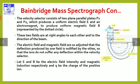The electric and magnetic fields are so adjusted that the deflection produced by one field is nullified by the other, so that the ions do not suffer any deflection within the velocity selector.